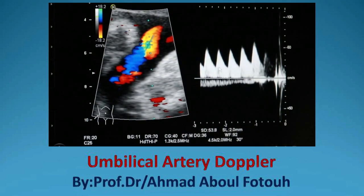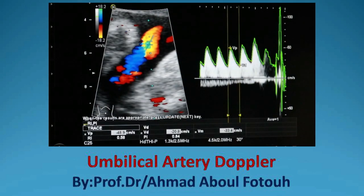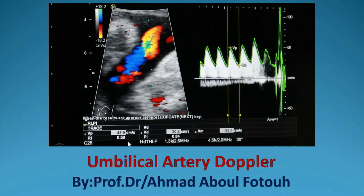I can take the measurements here — the automatic measurements — and the machine selects them. They appear reasonable to me. The resistive index is 0.58, which is very good for this age. The patient is 34 weeks, and the pulsatility index, when compared with the nomogram, will also be found to be well within normal range.